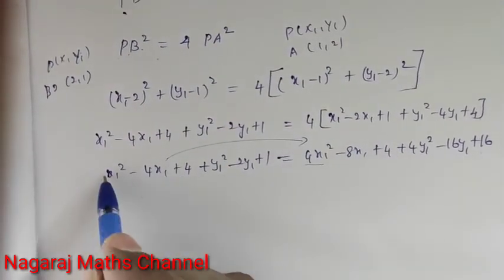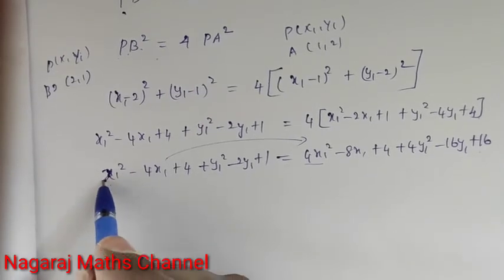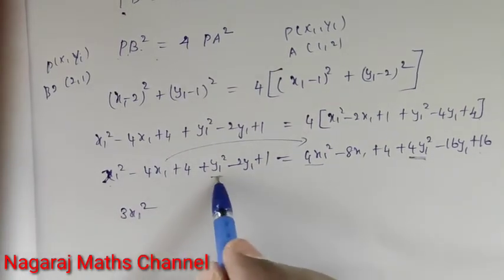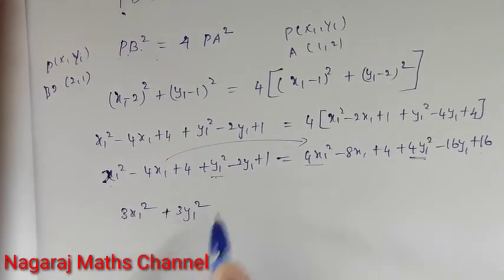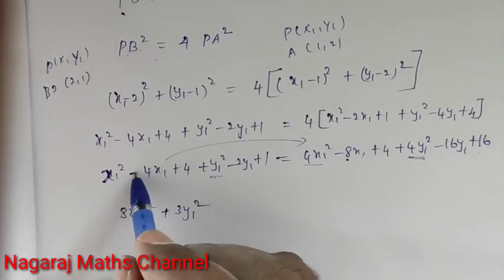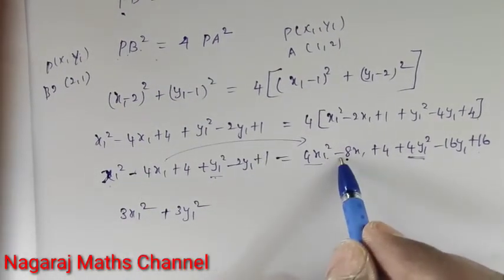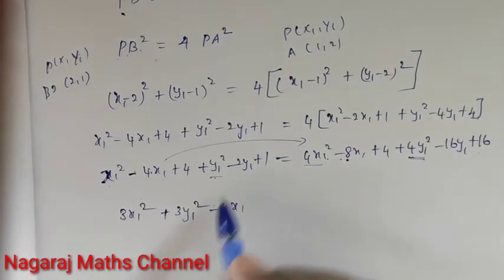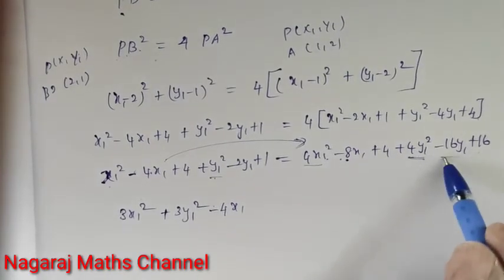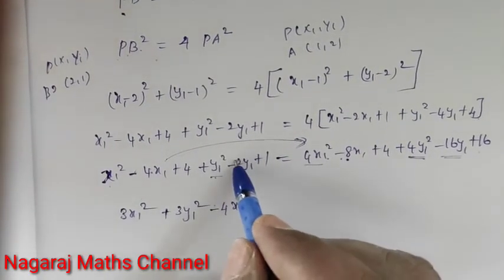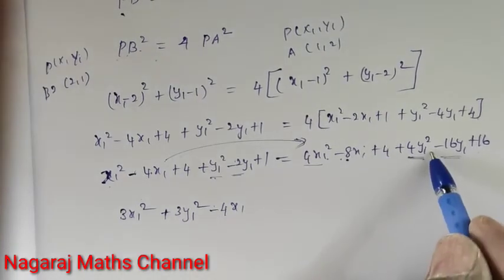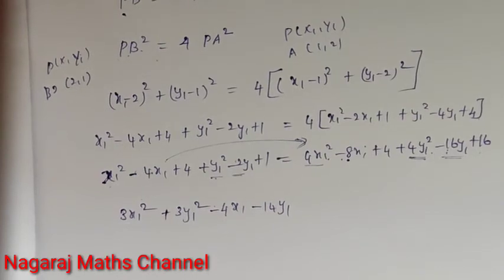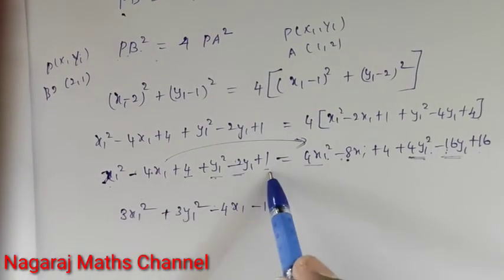Collecting like terms: we have 4x1 squared minus x1 squared giving 3x1 squared. We have 4y1 squared minus y1 squared giving 3y1 squared. For x1 terms: minus 8 plus 4 gives minus 4x1. For y1 terms: minus 16 plus 2 gives minus 14y1. For constants: 4 plus 1 gives 5.